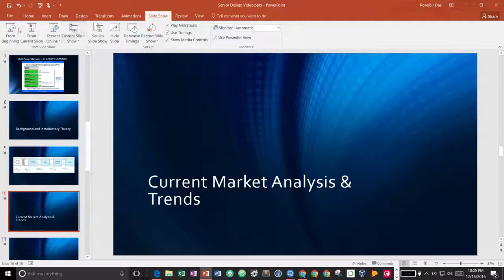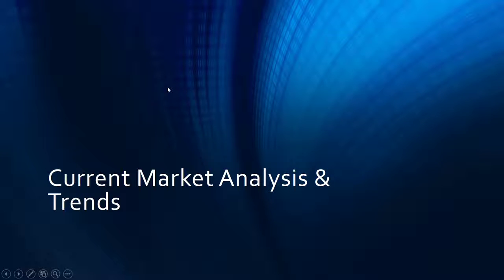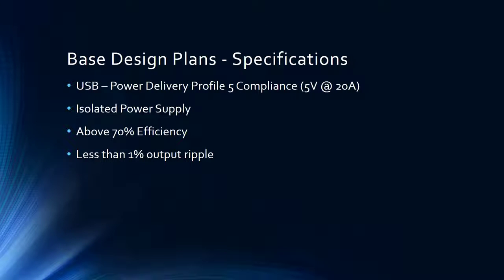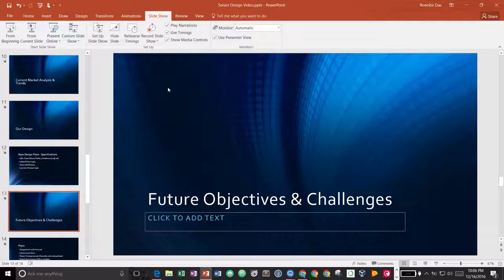There are actually not many suppliers in this space. Our base design specifications target USB Power Delivery Profile 5 compliance: 5V at 20A and 20V at 5A, covering laptops and multiple high-powered cell phones. It must be an isolated power supply, meaning AC mains and the final point-of-load are isolated via an isolation transformer. We also target above 70% conversion efficiency and less than 1% output ripple for a clean, high-quality design.